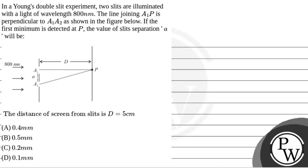Let's read the question. The question is given that in a Young's double slit experiment, two slits are illuminated with a light of wavelength 800 nm. The line joining A1P is perpendicular to A1A2 as shown in the figure here. If the first minimum is detected at P, then the value of the slit separation A will be what?